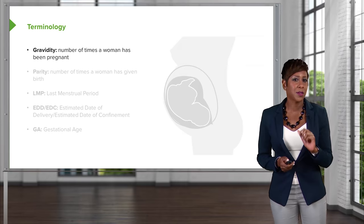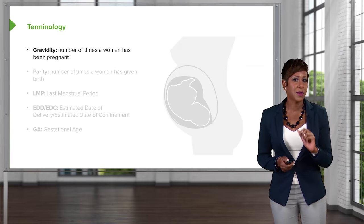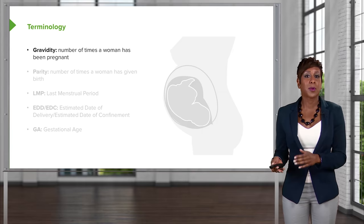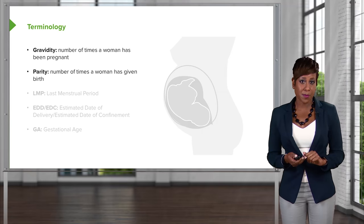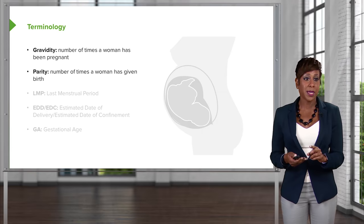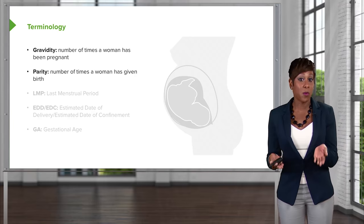Let's first go through some terminology. First, Gravidity — this is the number of times that a woman has been pregnant. Next is Parity — this is the number of times that a woman has given birth. This can be a little bit tricky. If we have a patient that has multiples, because that is only one pregnancy, her gravidity does not change. For example, a patient that gives birth to twins — her gravidity would be one, but her parity would be two: two children for that one pregnancy.